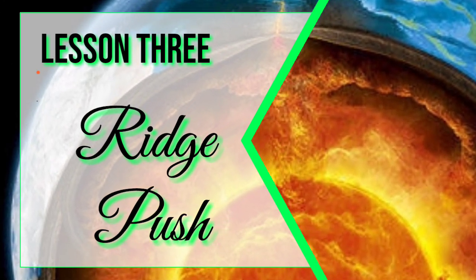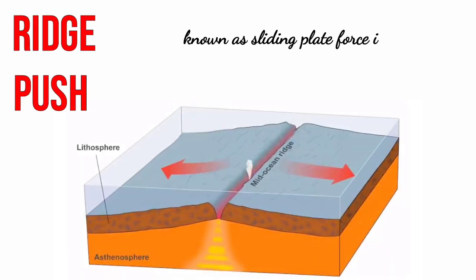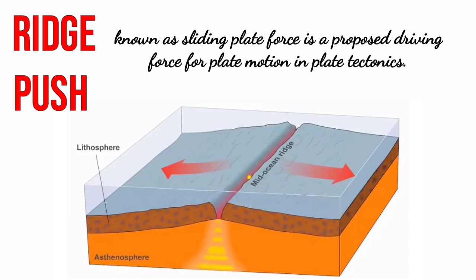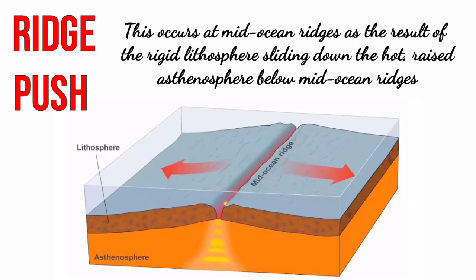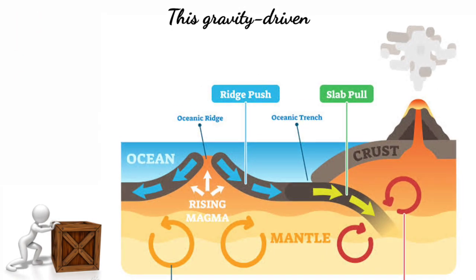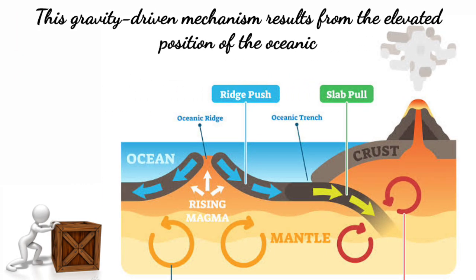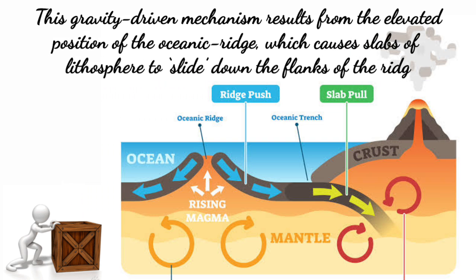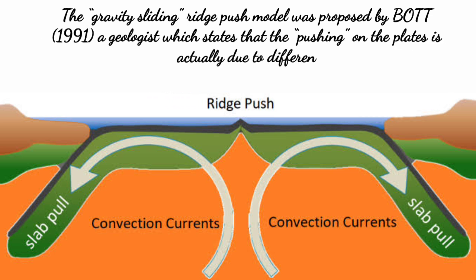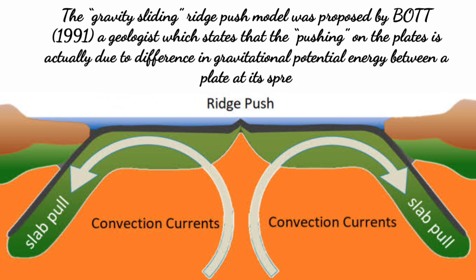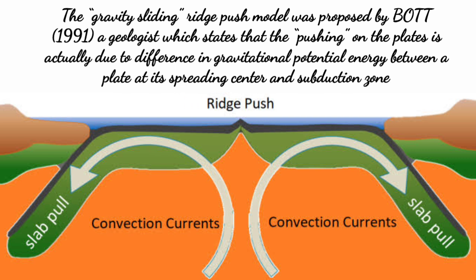Now we have Lesson 3: The Ridge Push. Ridge push, or sliding plate force, is a proposed driving force for plate motion in plate tectonics. This occurs at mid-ocean ridges as the result of the rigid lithosphere sliding down the hot, raised asthenosphere below mid-ocean ridges. This gravity-driven mechanism results from the elevated position of the oceanic ridge, which causes slabs of lithosphere to slide down the flanks of the ridge. This gravity-sliding ridge push model was proposed by Bot, a geologist, which states that the pushing on the plates is actually due to the difference in gravitational potential energy between a plate at its spreading center and subduction zone.